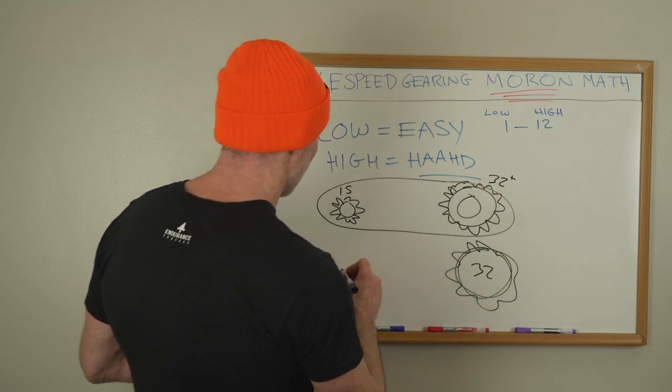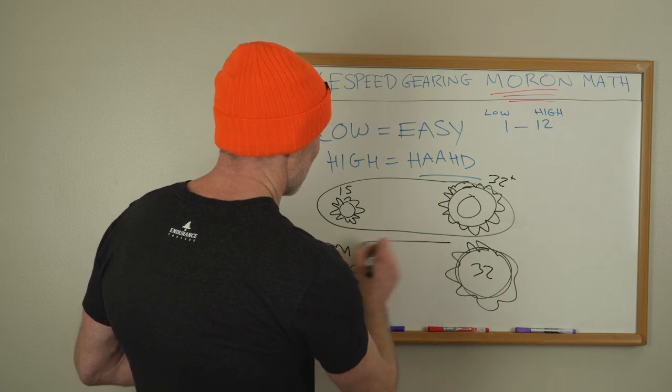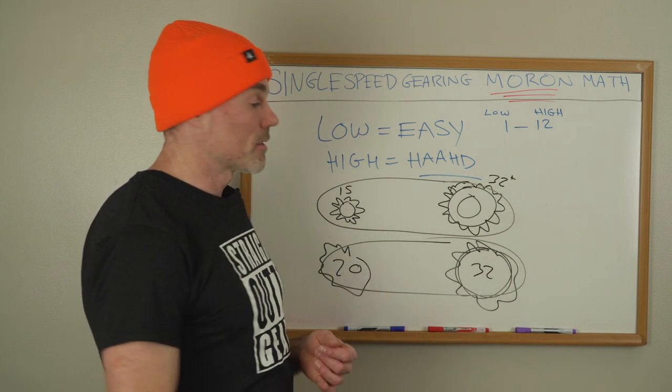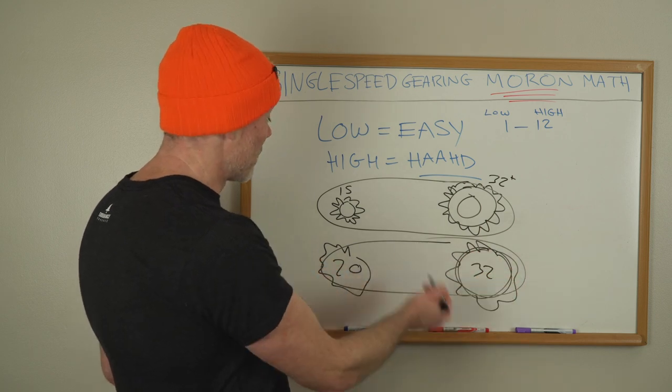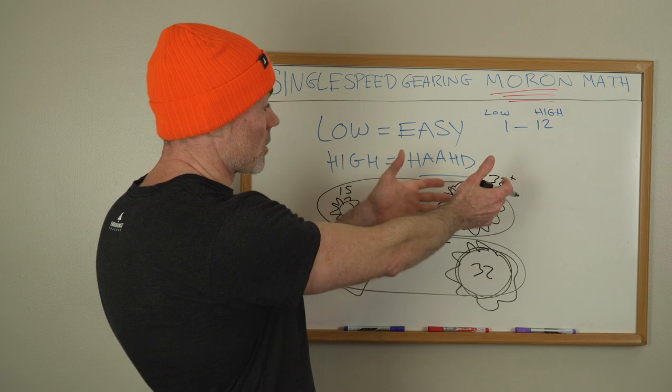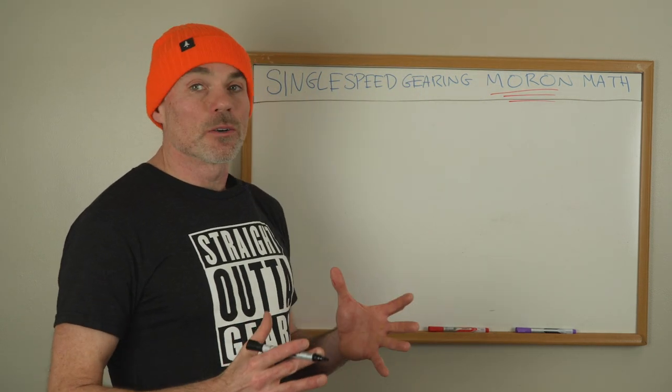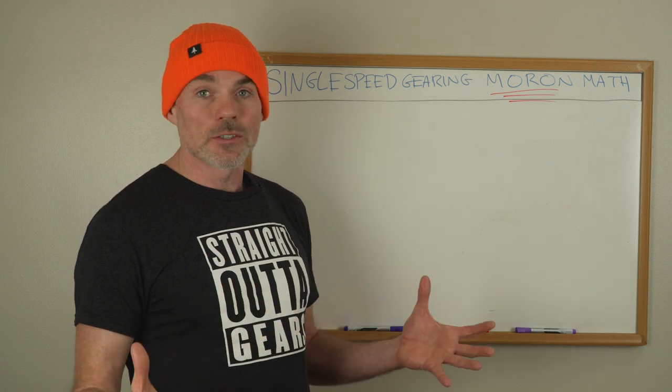All right, so then we'll do a 32 again. And then if you go to 20 tooth cog, that's going to be a much easier gear. So smaller in the front, easier. Bigger in the back, easier. Smaller in the back, harder. Smaller in the front, easier.